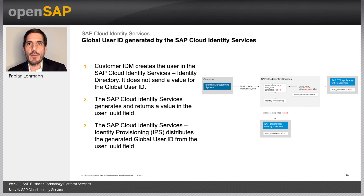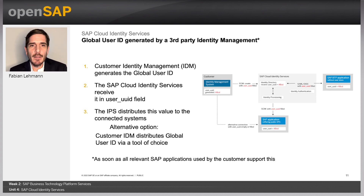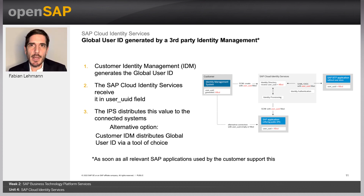If you are running Cloud Identity Service in proxy mode, you can also connect, for example, an Azure Active Directory. Additionally, if you want to create your own global user ID without using Cloud Identity Services, you can provide the user UUID value from your custom IDM solution and create the dataset in Cloud Identity Services with your own value.